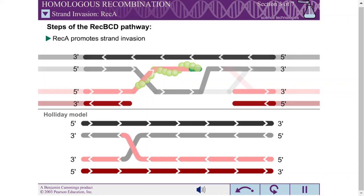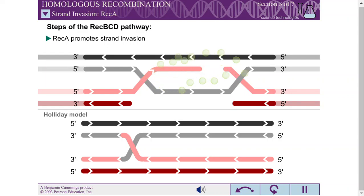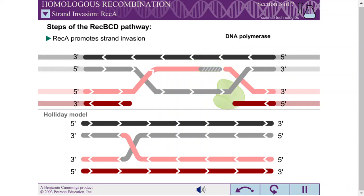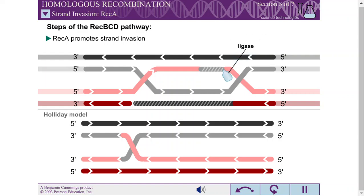However, unlike the Holliday model, the REC-BCD pathway can involve two Holliday junctions. Once the Holliday junctions have formed, REC-A can dissociate from the DNA. The replication machinery then fills in the gaps in the DNA. This synthesis of new DNA is another feature missing in the Holliday model.